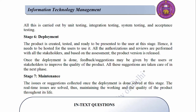Stage 6 — Deployment: The product is created, tested, and ready to be presented to the user at this stage. Hence, it needs to be hosted for the users to use it. All the authorizations and reviews are performed with all the stakeholders and, based on the assessment, the product version is released. Once the deployment is done, feedback and suggestions may be given by the users or stakeholders to improve the quality of the product. All these suggestions are taken care of in the next phase.